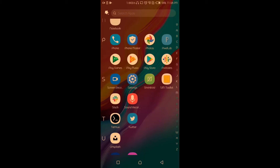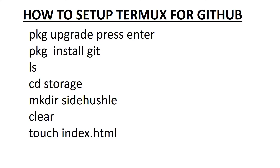These are some of the commands you're going to use after you're done installing Termux into your Android phone from the Play Store. First, you need to type pkg upgrade then press Enter. Once you are done, you need to install Git to your phone. After installing Git, you can use ls — ls allows you to view files in your phone.